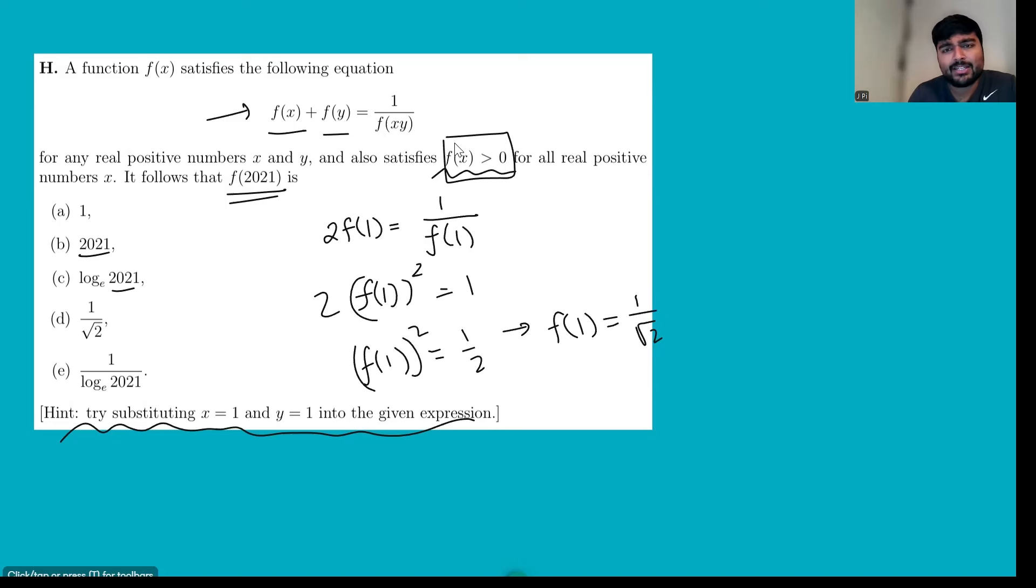So we get the value of f(1), but we're interested in f(2021). What do we get if we plug in 2021 into the equation? What do we plug in for 2021? x or y or both? It doesn't actually matter if we choose x or y because this is nice and symmetric.